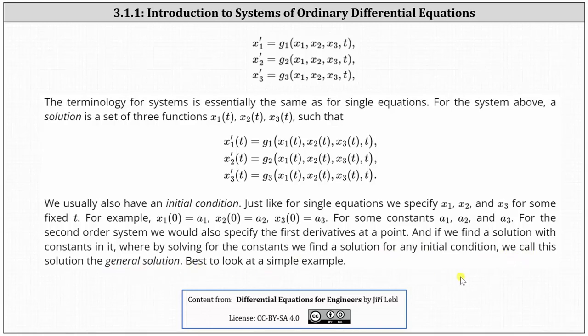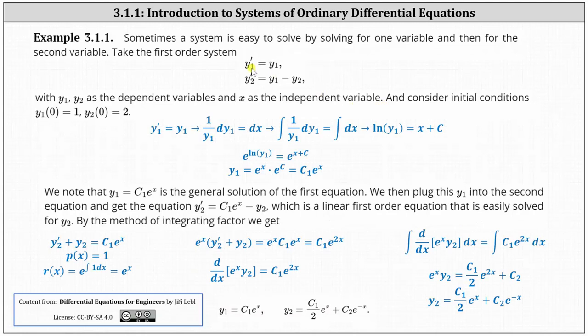Let's consider the system y1 prime equals y1 and y2 prime equals y1 minus y2, with y1 and y2 as dependent variables and x as the independent variable. Let's also consider the initial conditions y1 of 0 equals 1 and y2 of 0 equals 2.